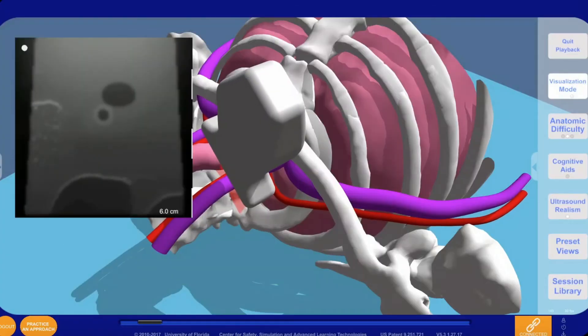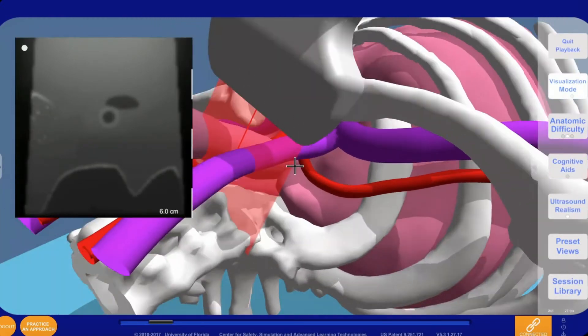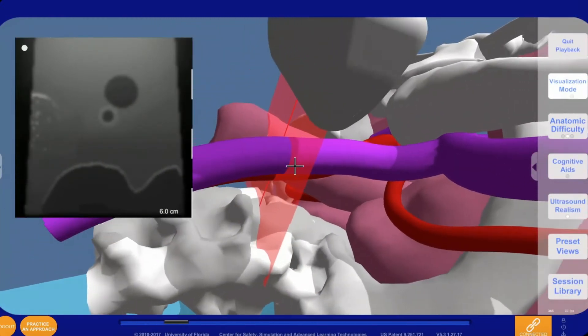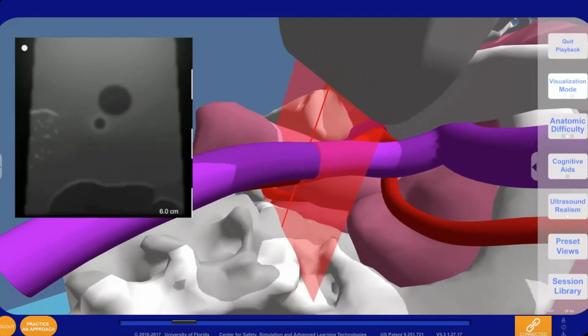Cognitive aids can be used to draw a midline over both the virtual ultrasound image and the insonating plane within the visualization. A sheet of red light depicts the ultrasound insonating plane in the visualization. The ultrasound image can be frozen or flipped for different styles of use.